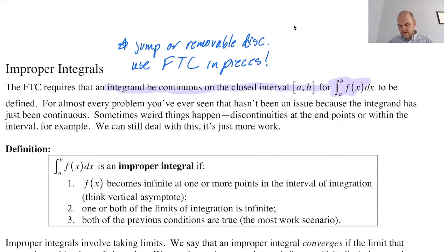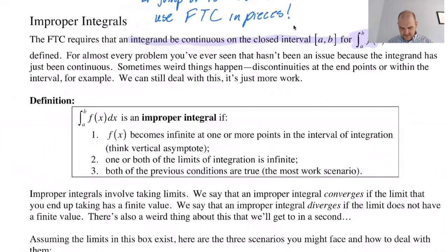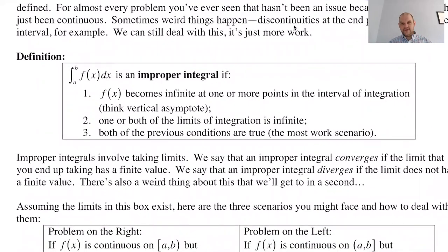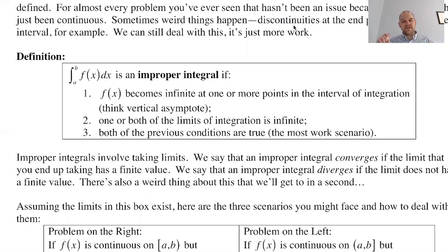What we're going to talk about is where infinity gets involved — when infinity gets involved, things get weird. An improper integral is an integral where either f(x) becomes infinite at one or more points in the interval. If there's a vertical asymptote somewhere between a and b and you're trying to integrate from a to b, what are you going to do? We're going to talk about that.